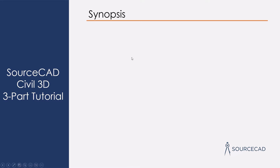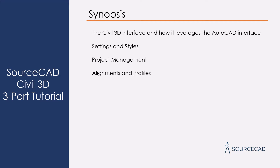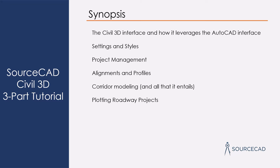The synopsis for this three-part series is as follows: we'll talk about the Civil 3D interface and how it leverages the AutoCAD interface. We'll cover settings and styles, how they control the way things look and when they get created. We'll delve into project management, data referencing, and seeing Civil 3D objects in other files, similar to AutoCAD X-referencing. We'll talk about alignments, profiles, corridor modeling, and plotting roadway projects. Basically, we're going to create a road from beginning to end by the end of this tutorial.